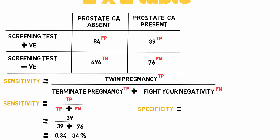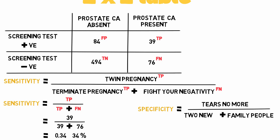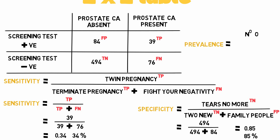Next we have specificity. Continuing from the previous scenario: tears no more (TN), two new (TN), additional family people (FP). So specificity equals the true negative, 494, divided by the true negative, 494, plus the false positive, 84, which equals 0.85 or 85%.